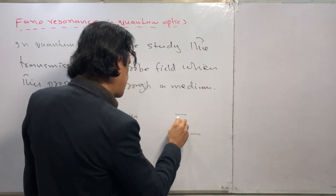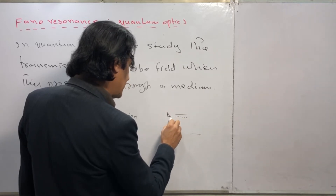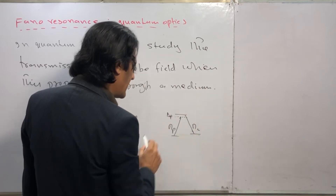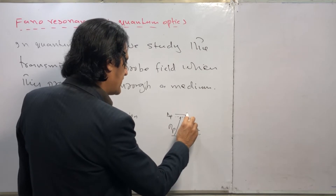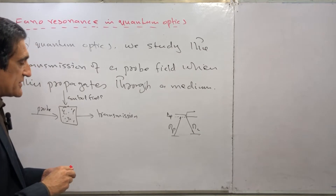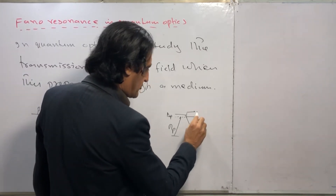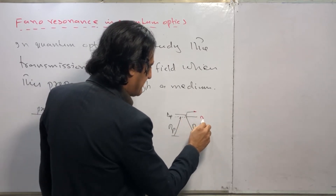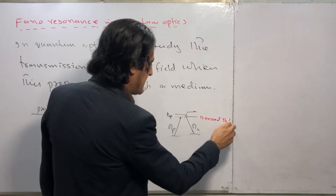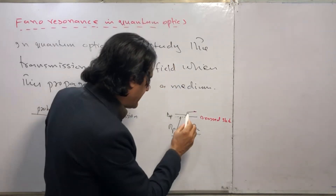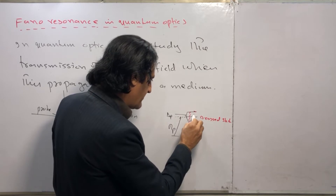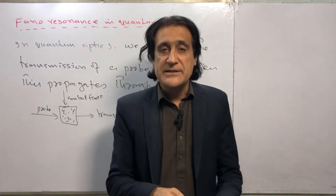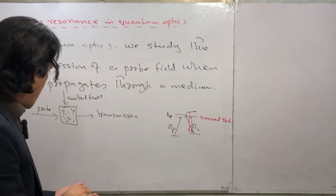In this atomic system, let's suppose there is some detuning delta_p. If I apply a probe field omega_p and a control field omega_c, then this field can split the energy levels. This is called Stark splitting. This is a dressed state — this should be noted because I am going to discuss Fano resonance, so the dressed state is very important. These two states are indistinguishable.